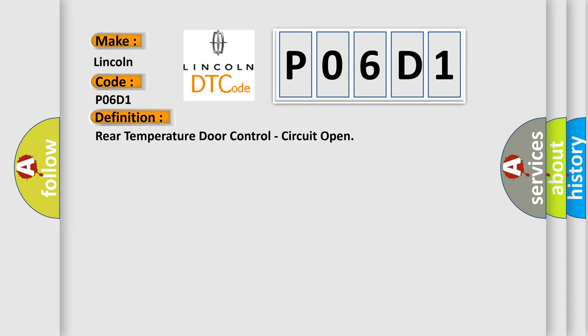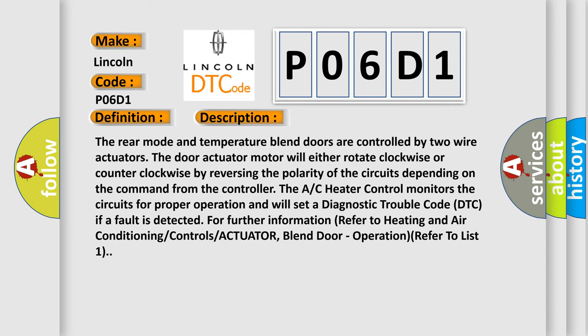And now this is a short description of this DTC code. The rear mode and temperature blend doors are controlled by two wire actuators. The door actuator motor will either rotate clockwise or counterclockwise by reversing the polarity of the circuits, depending on the command from the controller. The AC heater control monitors the circuits for proper operation and will set a diagnostic trouble code DTC.